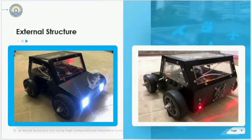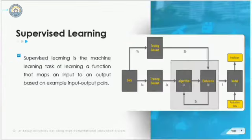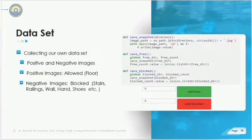We are using a supervised learning approach to train our model. In this approach, the training dataset is passed through an algorithm, and after that the testing dataset is evaluated upon that model. After the evaluation, that model is used for prediction. Here you can see we are collecting our own dataset of positive and negative images.